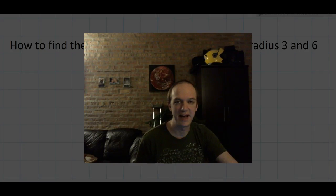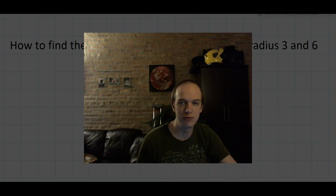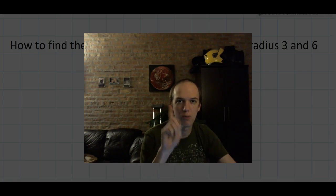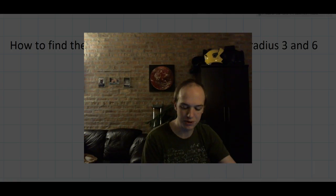Hello, everybody. Welcome back to ECMath 2016 edition. This video is going to be split into two parts. Part 1, we're going to talk about finding the tree radius for Orchards of Radius 3 and 6. Part 2, we're going to talk about finding the time it takes for the trees to grow into the radius that we find in Part 1. Without further ado, let's get into Part 1.